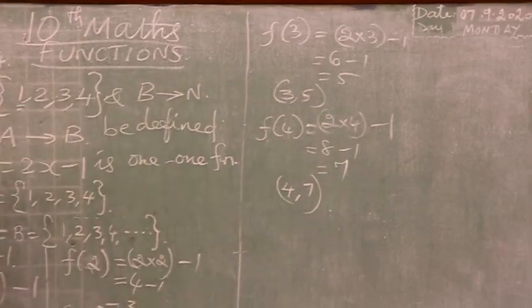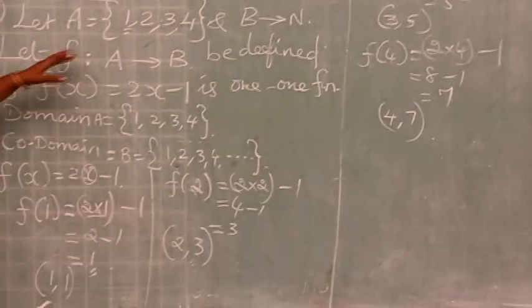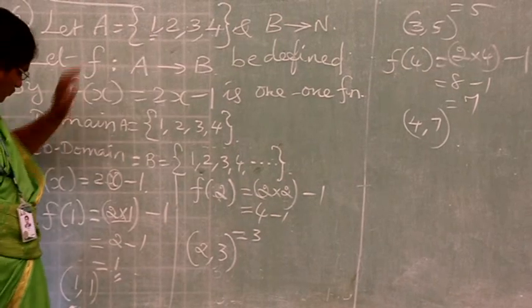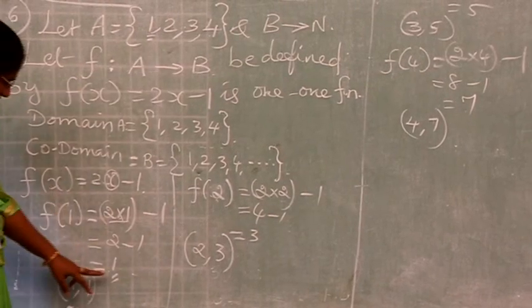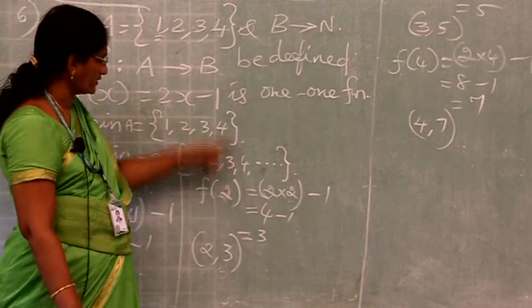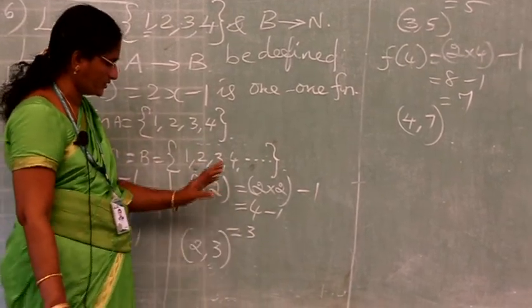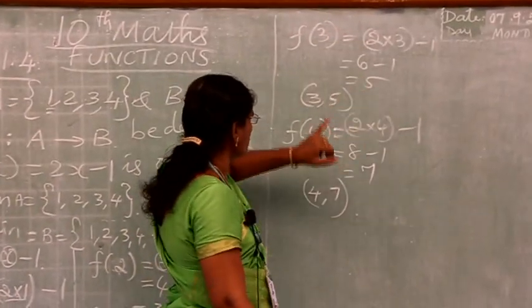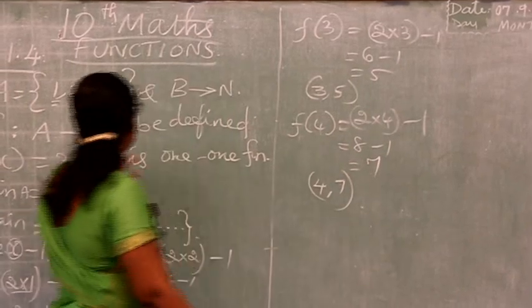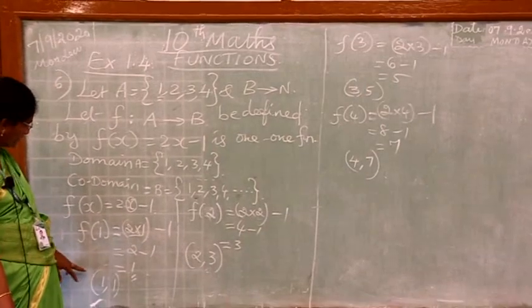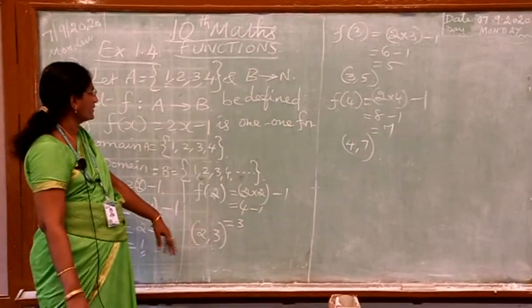See, how did you get this 1 comma 1? See, this is domain, this is range. If you put 1 for x, you will get the answer 1, so 1 comma 1. If you put 2 for x, you will get the answer 3, so 2 comma 3. If you put 3, you will get the answer 5, so 3 comma 5. 4 comma 7. Now we have written in ordered pairs.